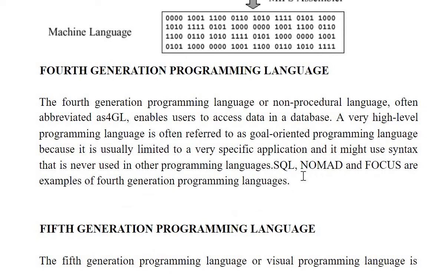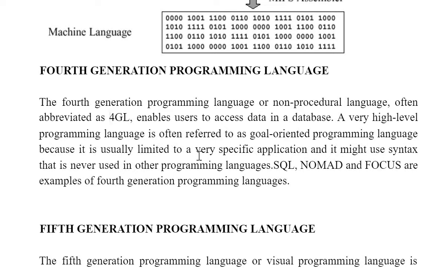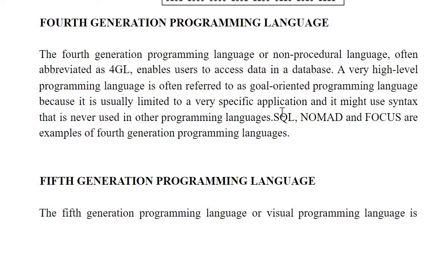Next is fourth generation language — also called non-procedural language, abbreviated as 4GL. The best example of this fourth generation language is database. It enables users to access data in a database. A very high level programming language is often referred to as goal oriented programming language because it is usually limited to a very specific application and may use syntax never used in other programming languages. Examples of fourth generation languages are SQL, Nomad, Focus, etc.